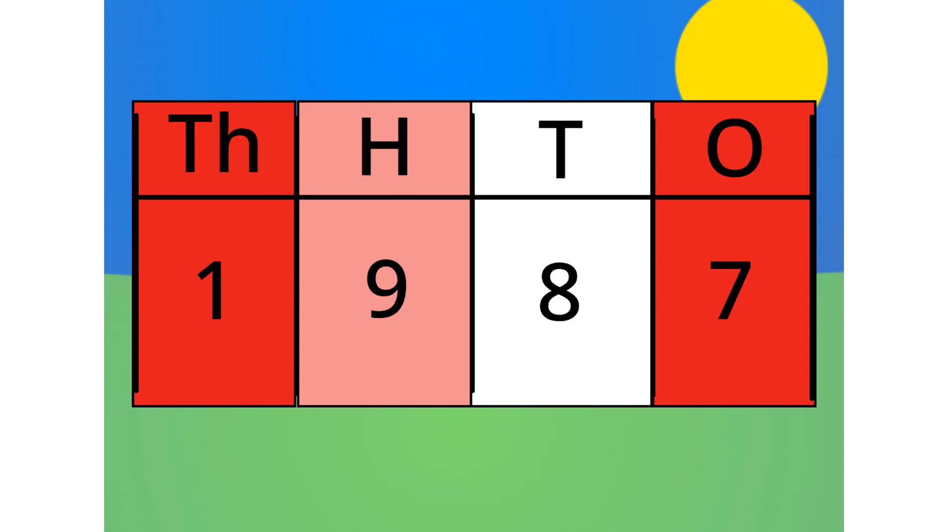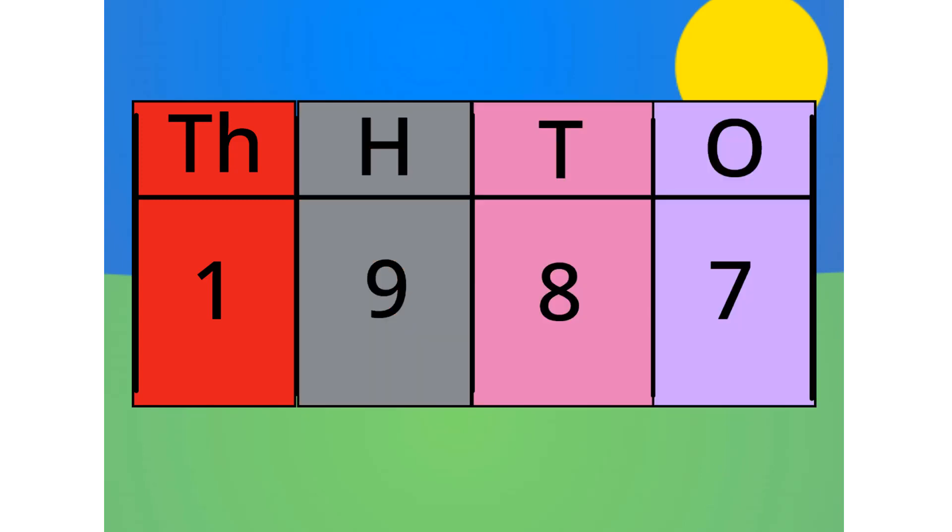This number is made up of 1,000, 900s, 8 tens and 7 ones. See? Let's see this in block form, shall we?